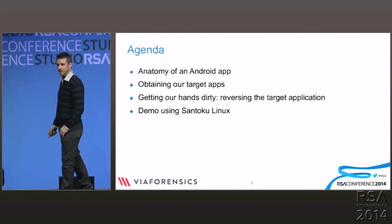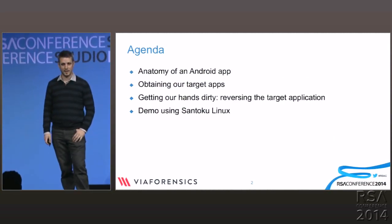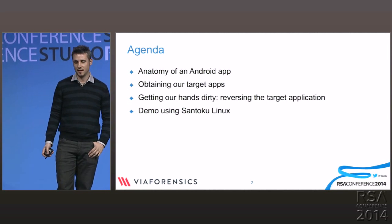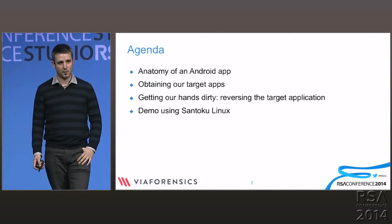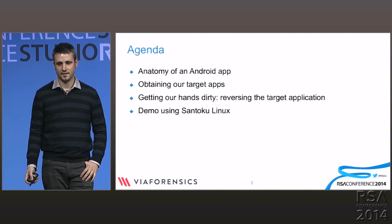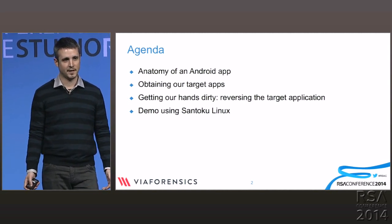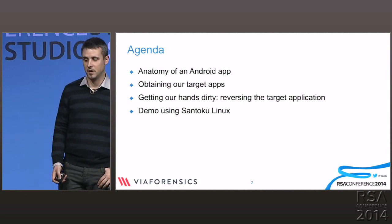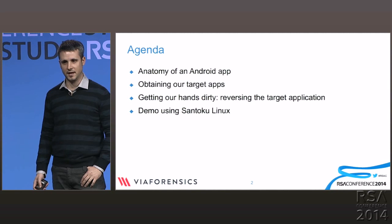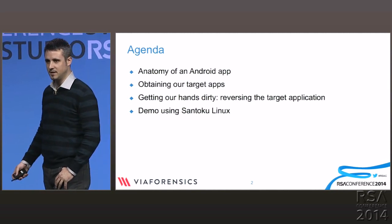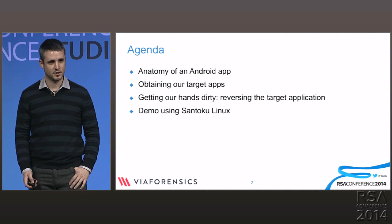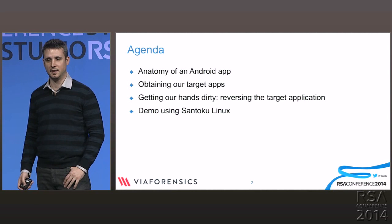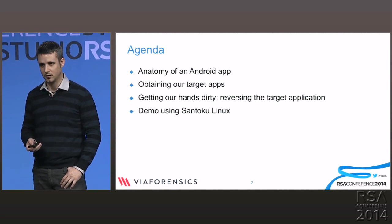First we will see how an Android application is structured from the files that compound it. Then we will see a few methods to obtain the Android application either from a mobile device or from the Android Market. Then we will see a few methods to reverse engineer the application and change its behavior, and finally we will see a quick demo using Santoku Linux, a Linux distribution that has all the tools needed — so you don't need to set up your computer.